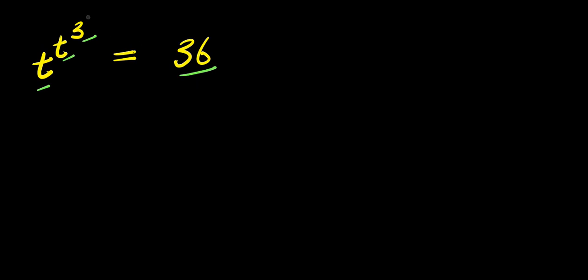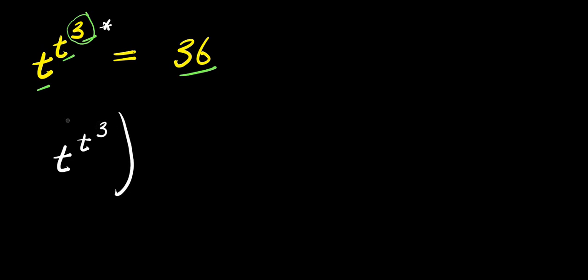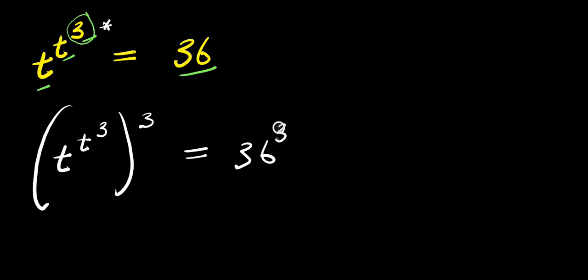Now, we have power 3 here, and because of this fact, we are going to raise each part of this equation to the power of 3. So we have t to the power of t to the power of 3, and this is raised to the power of 3, and this equals 36 to the power of 3.